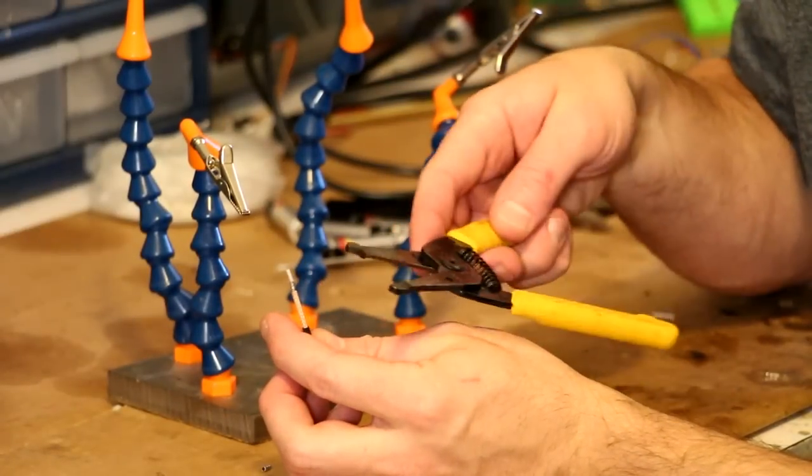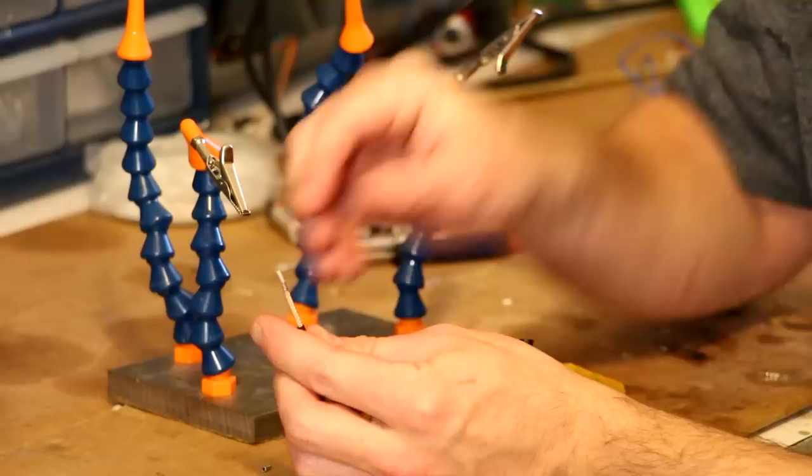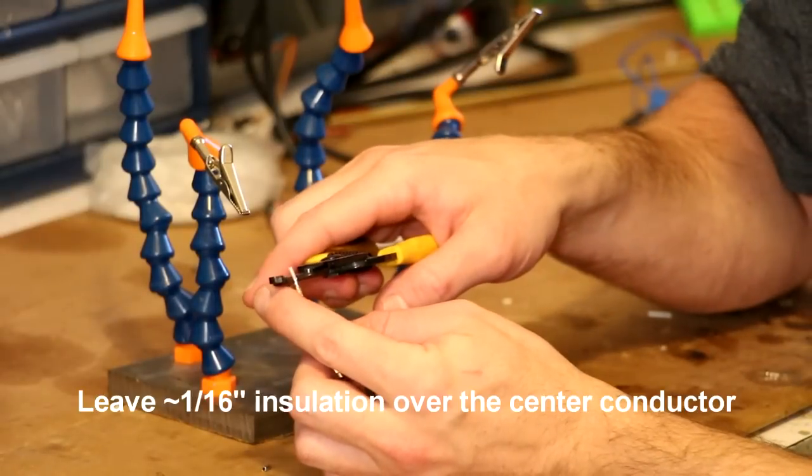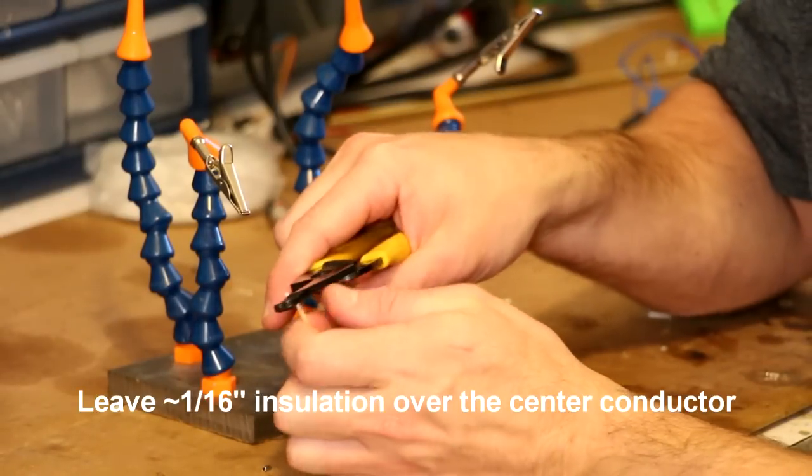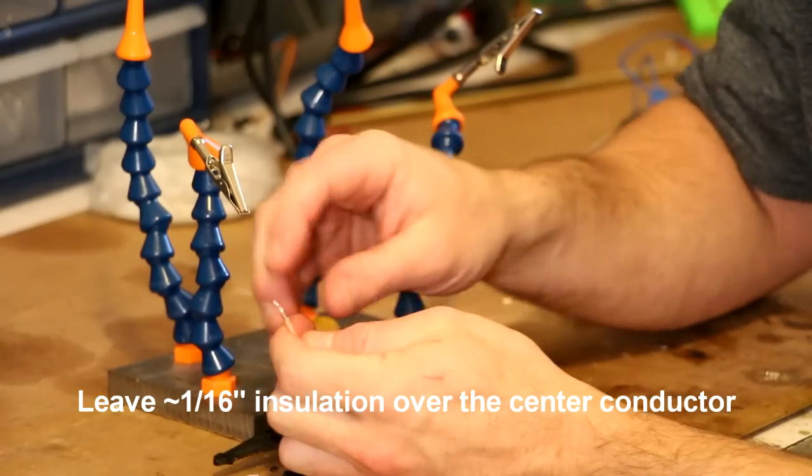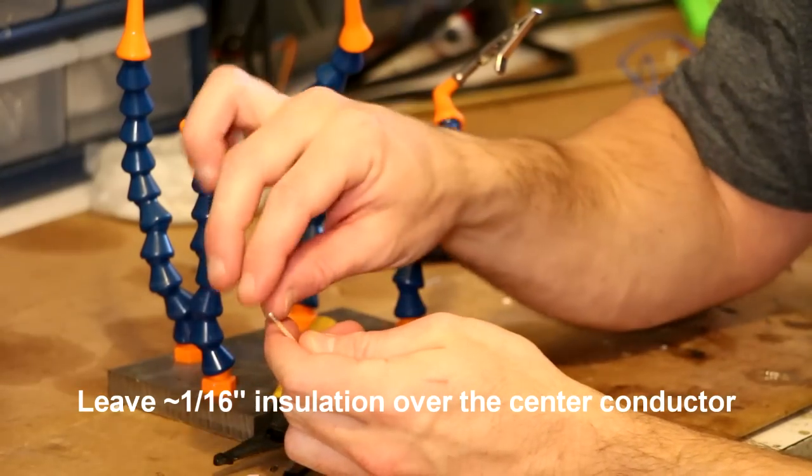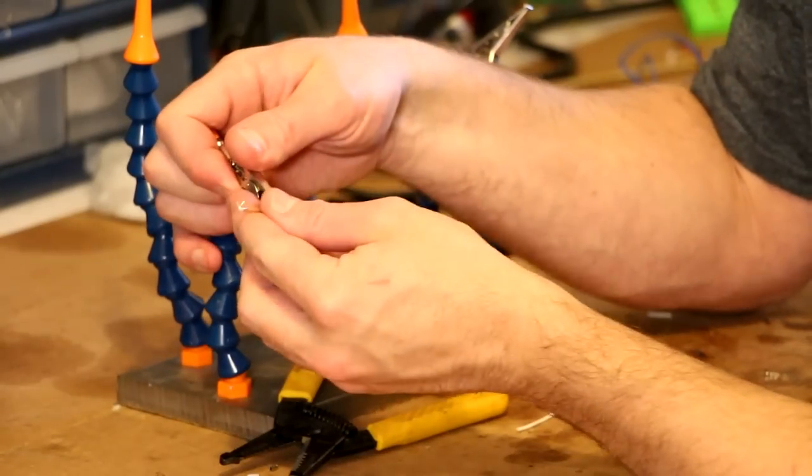The next thing you're going to want to do is remove the insulation from the center conductor. Again using wire strippers, leave as little as possible but just enough so there's not a short when you bend the wire over the top.